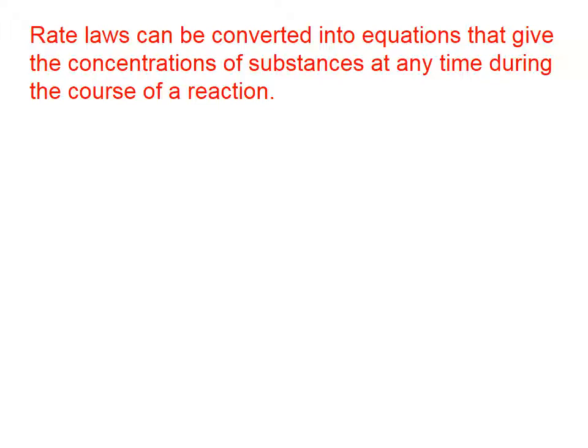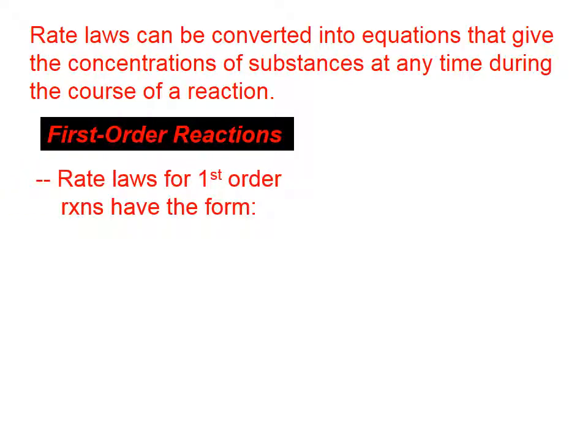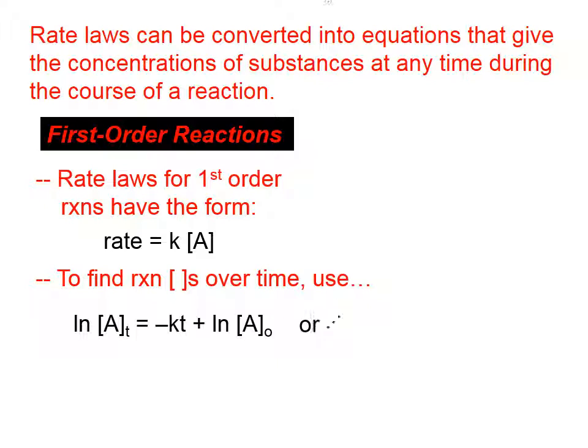Rate laws can be converted into equations that give the concentrations of substances at any time during the course of a reaction. If you have a first-order reaction, then the rate law will have this form: rate equals k times the concentration of one reactant raised to the first power. To find the reaction concentrations over time, you're going to use that equation.